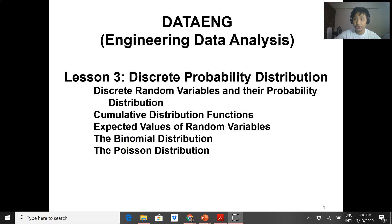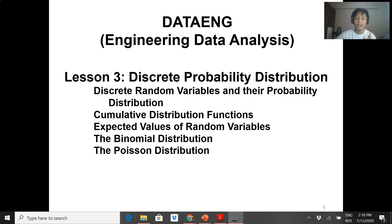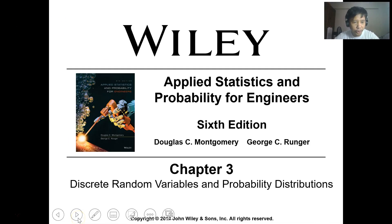We will proceed with Lesson 3: Discrete Probability Distribution. This topic contains discrete random variables, the probability distribution for discrete random variables, the cumulative distribution function, the expected value of discrete random variables, the binomial distribution, and the Poisson distribution. This is Chapter 3 of Applied Statistics and Probability for Engineering by Montgomery and Runger.